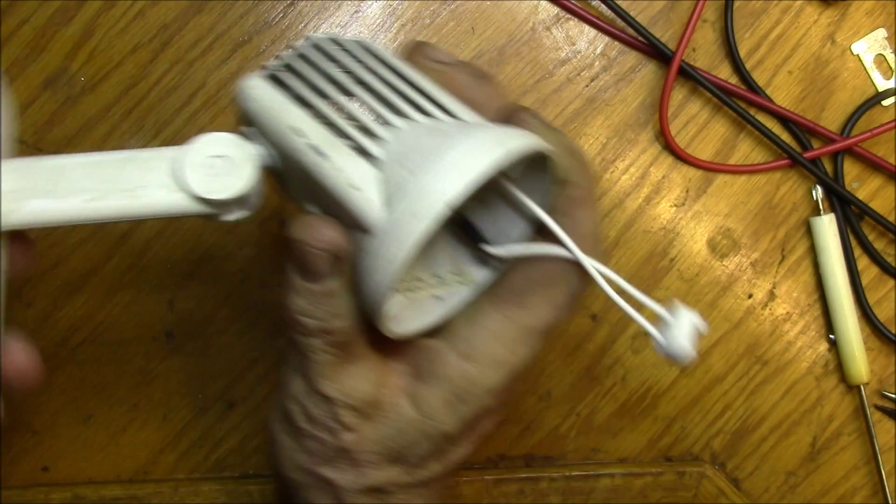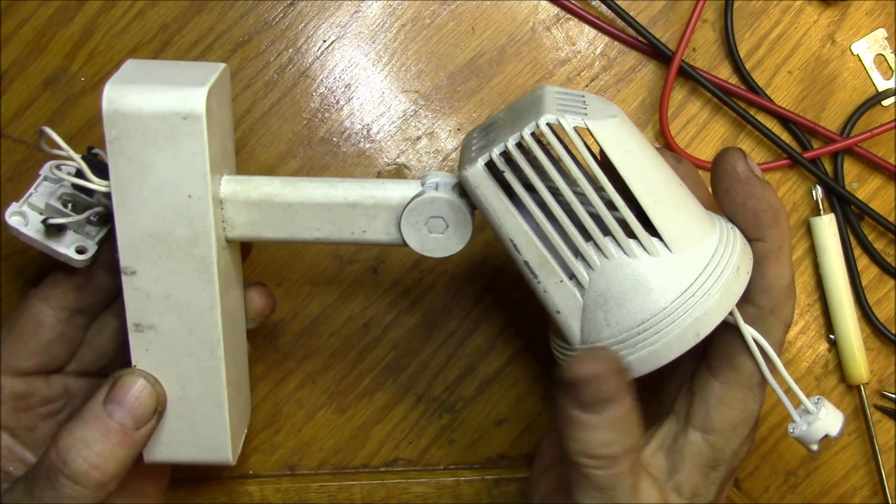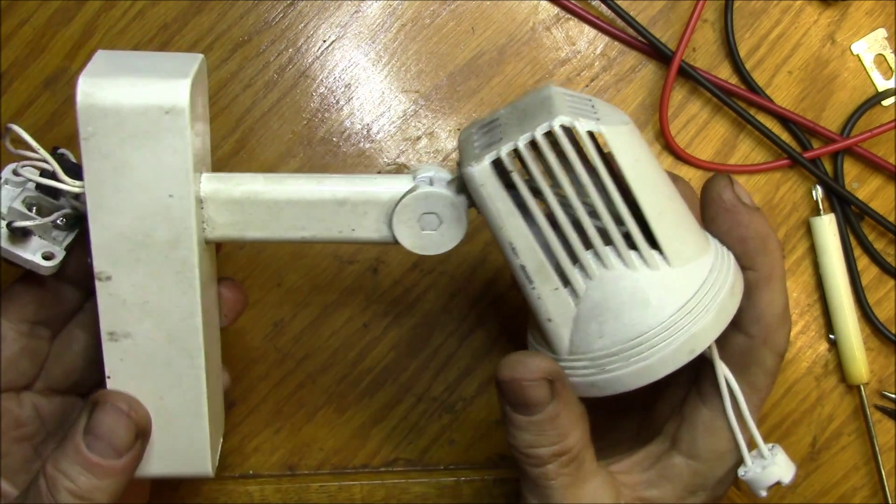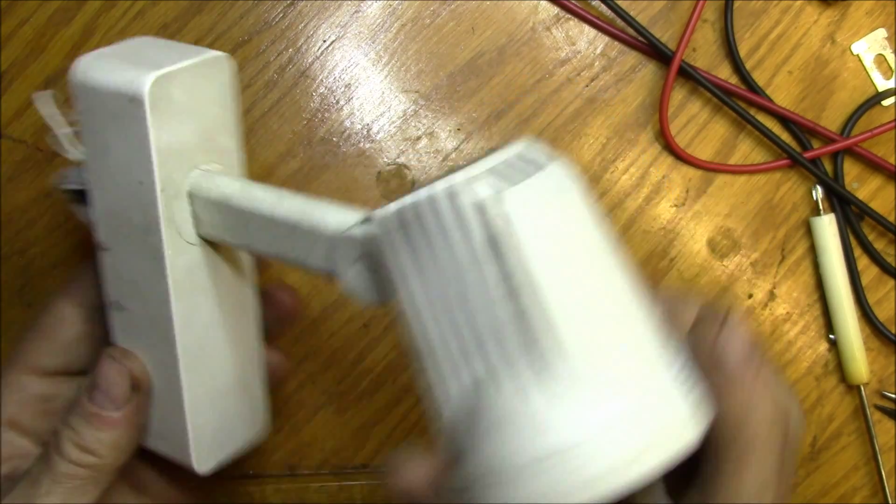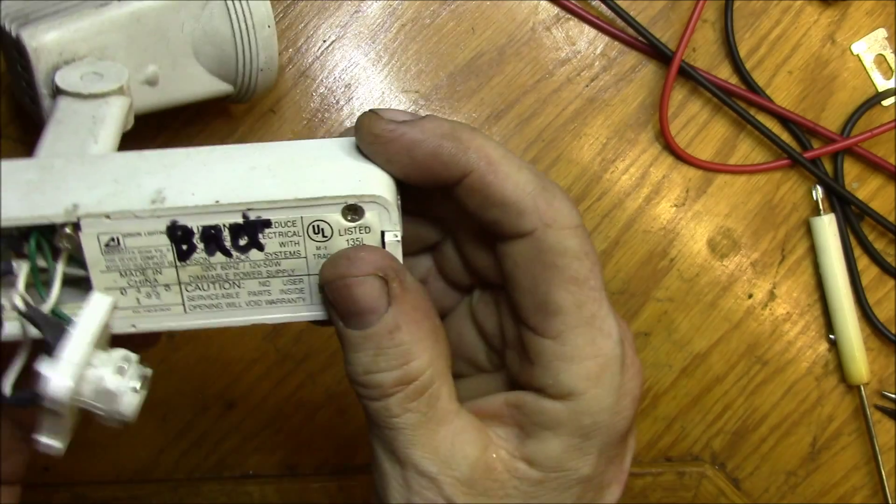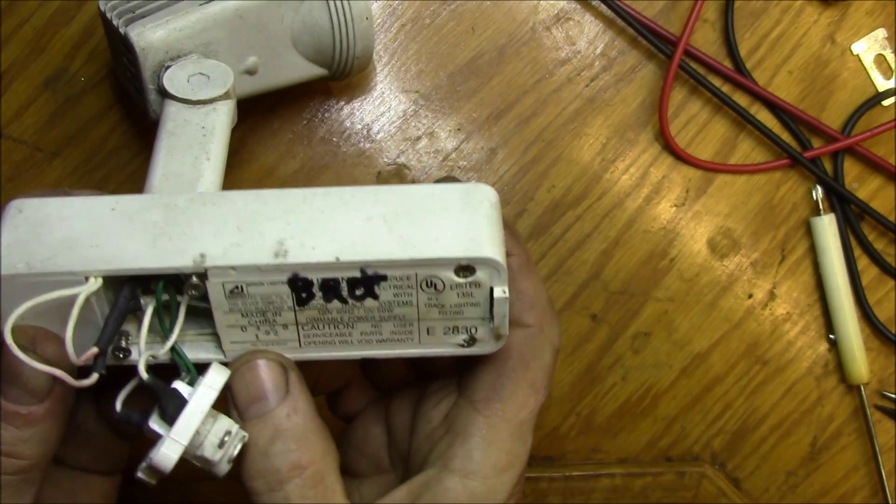Good evening YouTube, this is one of the low voltage track light fixtures I use in my kitchen. I have six of these installed, and then I have this one - you can see this one says bad.